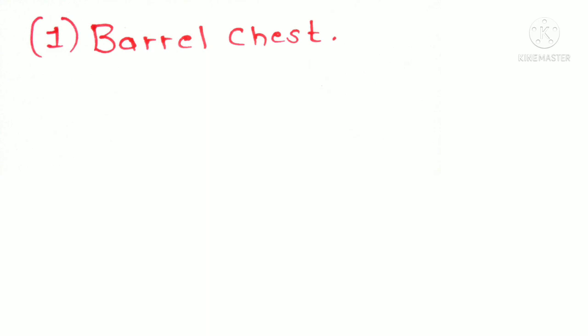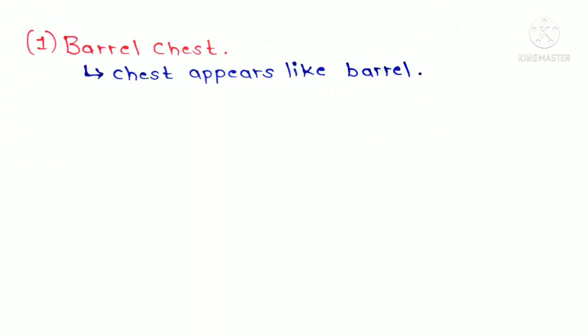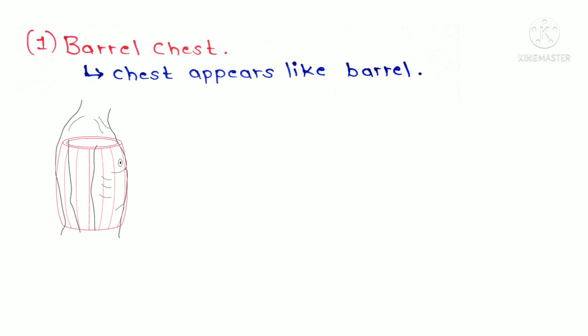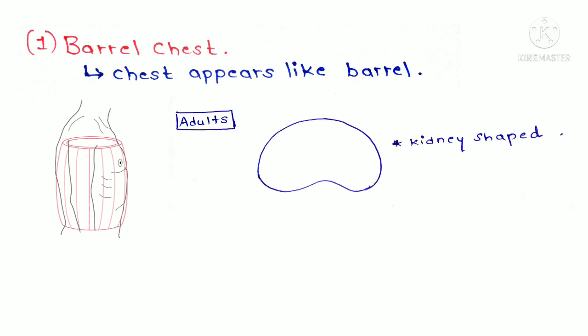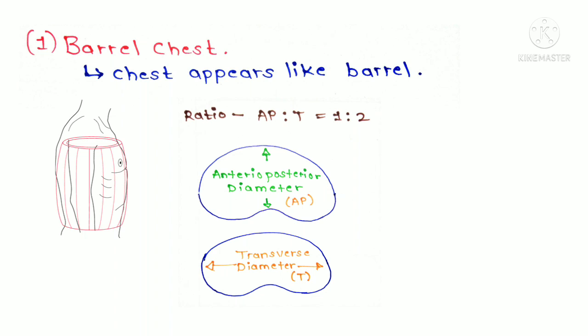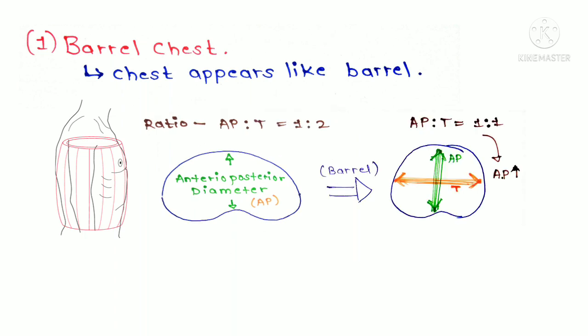First is barrel chest. As the name suggests, the chest will have the appearance of a barrel, as shown in the image. Recall that the transverse section of the thorax in an adult is kidney-shaped, whereas in infants below the age of 2 or 3 the transverse section of the thorax is circular or round. In patients with barrel chest, the anterior-posterior diameter increases and becomes equal to the transverse diameter, causing barrel chest.